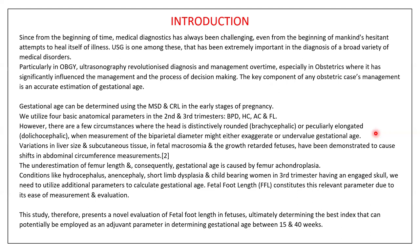However, there are few circumstances where the head is distinctively rounded such as in brachycephaly, or in case of dolicocephaly it is elongated. When measuring BPD, it might either exaggerate or undervalue the gestational age. There are certain conditions where there is variation in liver size and subcutaneous tissue in cases of fetal macrosomia or growth-retarded fetuses, which cause shifts in abdominal circumference measurements. Underestimation of femur length and consequently gestational age is caused by achondroplasia.